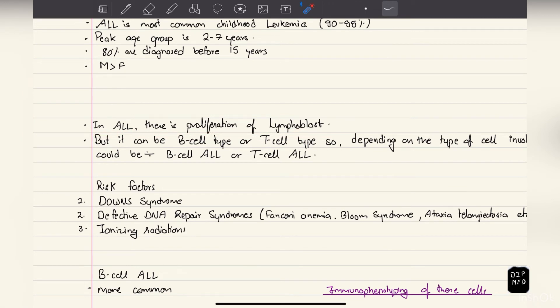In ALL there is proliferation of lymphoblasts, but these lymphoblasts can be either primitive B-type lymphoblasts or T-type lymphoblasts. Depending on that, ALL can be divided into B-cell ALL or T-cell ALL.